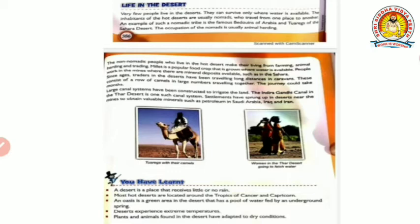Since ages, traders in the desert have been traveling long distances in caravans, consisting of a row of camels in large numbers traveling together - the journey could take months. Large canal systems have been constructed to irrigate the land. There is an underground pipe supply system used for farming, drawing water from a water source through underground or overground techniques. The Thar desert has one such canal system. Settlements have sprung up in deserts near mines to obtain valuable minerals such as petroleum in Saudi Arabia, Iraq and Iran.